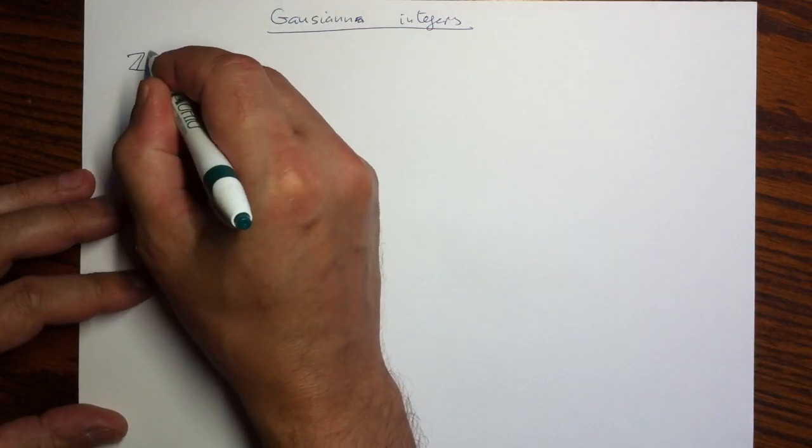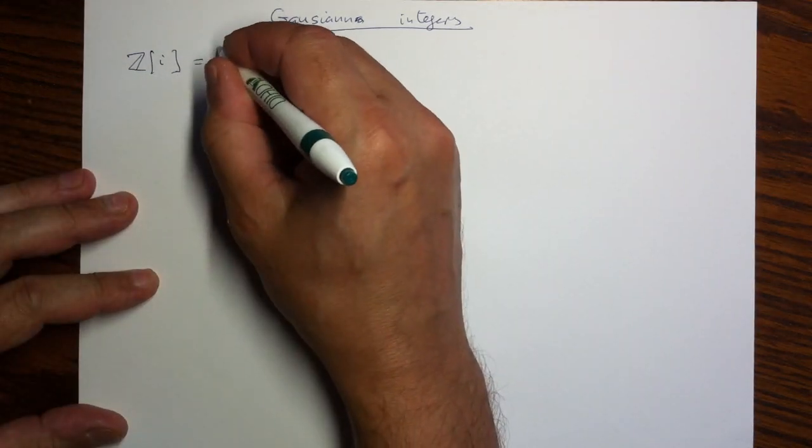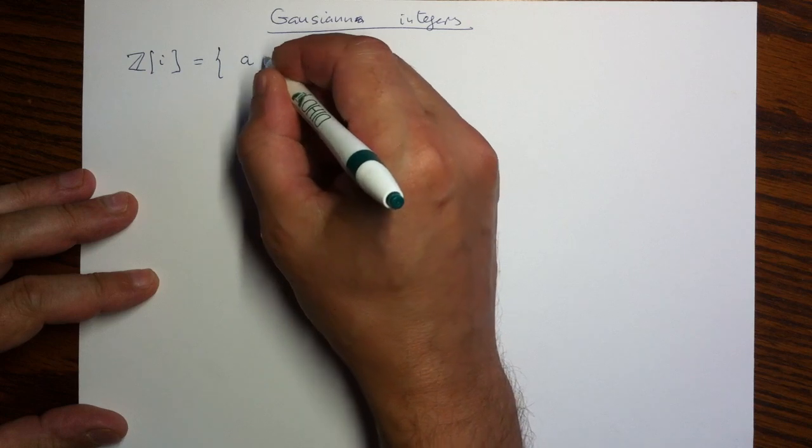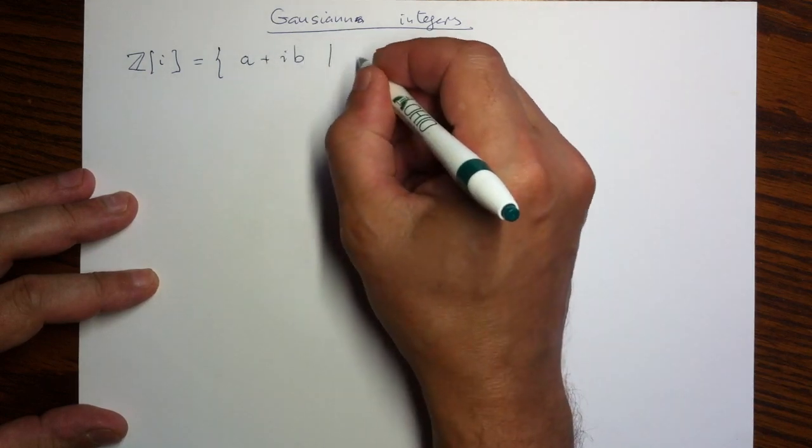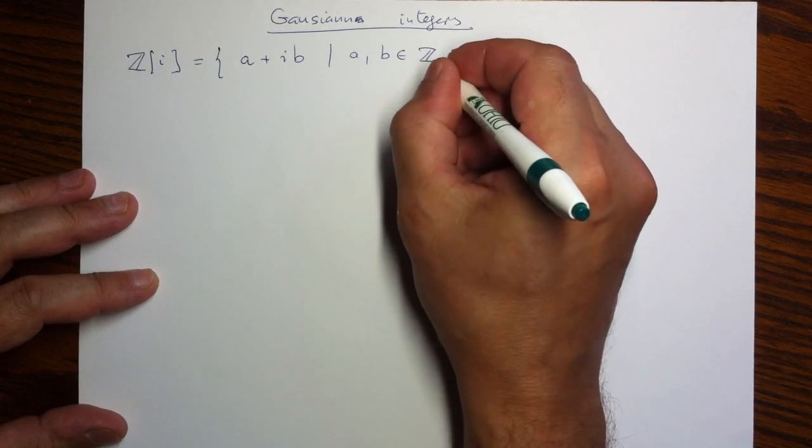The collection of them is denoted this way, and by definition, they consist of complex numbers with integer real and imaginary parts.